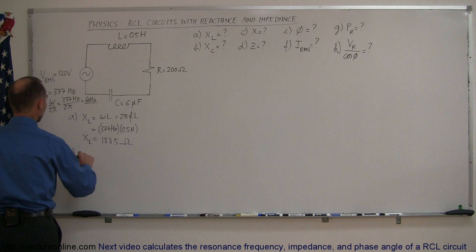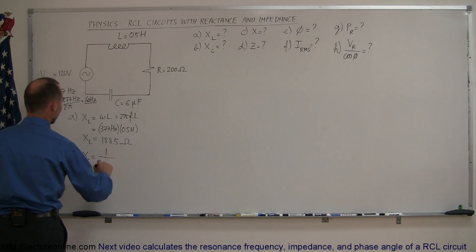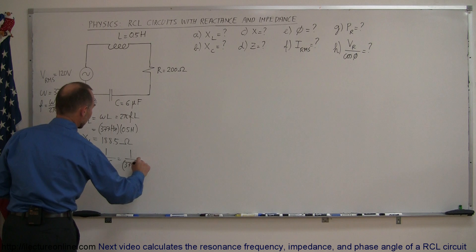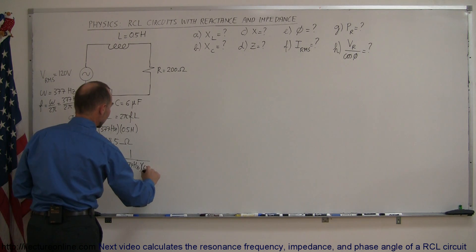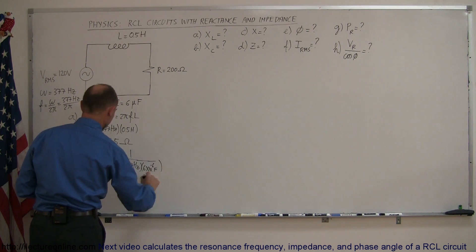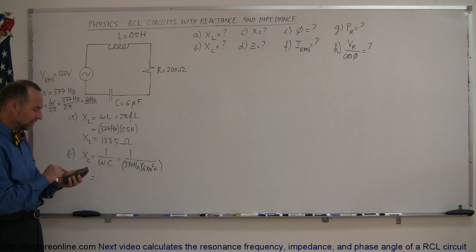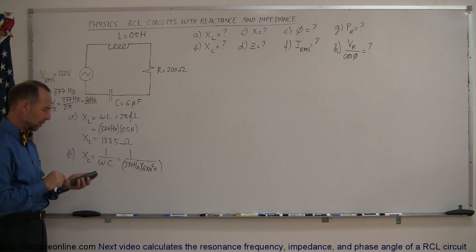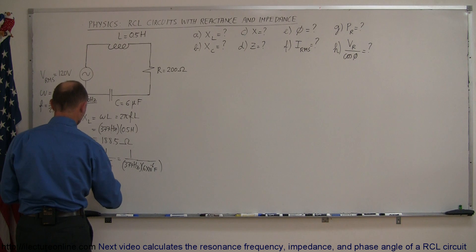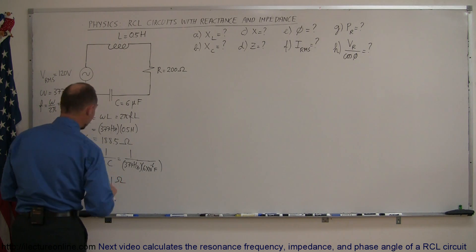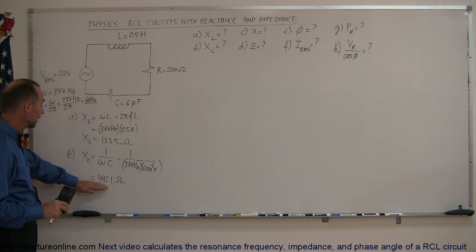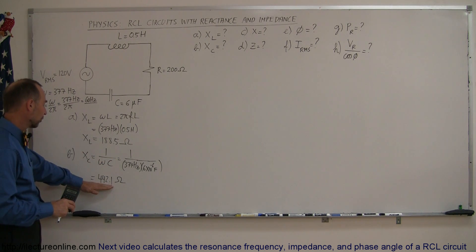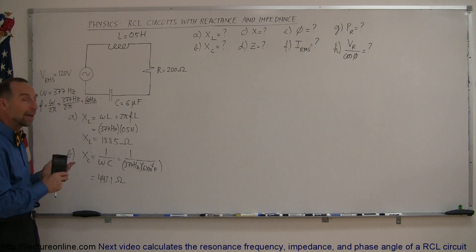For Part B, the capacitive reactance equals 1 over omega times C, so it equals 1 over 377 hertz times the capacitance of 6 microfarads, which is 6 times 10 to the minus 6 farads. So 377 times 6e-6, take the inverse of that, and we get 442.1 ohms. You can see that the capacitor has more opposition to current flow than the inductor, so the whole circuit will act more like a capacitive circuit, meaning the voltage will lag the current.